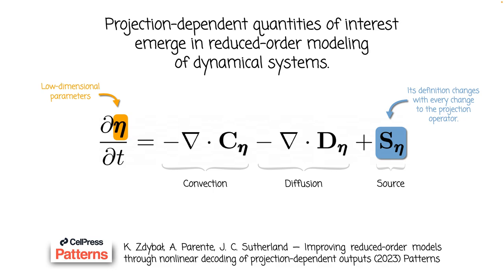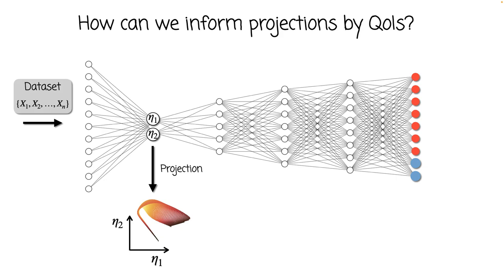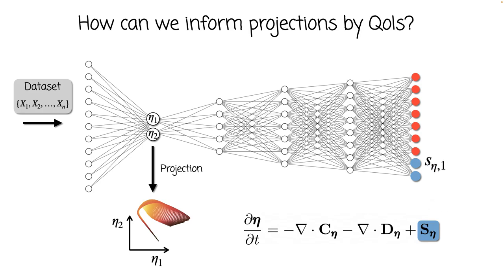Therefore, s_eta becomes a very important quantity of interest. Ideally, the topological quality of our low-dimensional parameters should be informed by how s_eta is represented over the projection. Coming back to our encoder-decoder, this bottleneck layer with only two neurons is where we compute a two-dimensional projection of the input dataset. If we wanted three-dimensional projections, we would use three neurons in that bottleneck, and so on. With two low-dimensional parameters eta1 and eta2, we also have two projected source terms, s_eta1 and s_eta2. We can plug them back at the output layer since they will be crucial quantities of interest, and remember their definition will change throughout training depending on the current weights in the encoding layer.